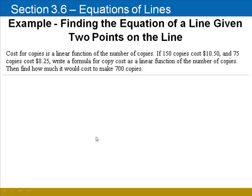Here's a problem from MyMathLab asking us to find the equation of a line through two points in a real setting. Cost for copies is a linear function of the number of copies. If 150 copies cost $10.50 and 75 copies cost $8.25, write a formula for the copy cost as a function of the number of copies. Then find out how much it would cost to make 700 copies.